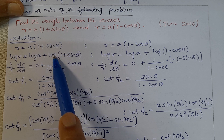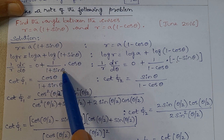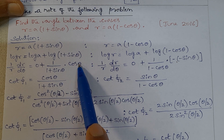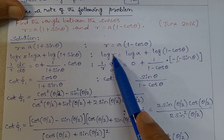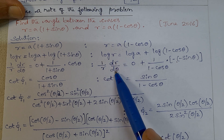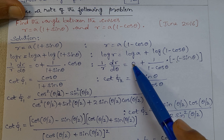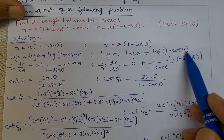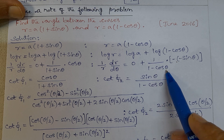Differentiation of log of (1 plus sin theta) is 1 divided by (1 plus sin theta), times the derivative of (1 plus sin theta), which gives cos theta. Next, differentiating log r with respect to theta gives 1 by r times dr by d theta. Differentiating log a gives 0. Then differentiation of log of (1 minus cos theta) is 1 divided by (1 minus cos theta).